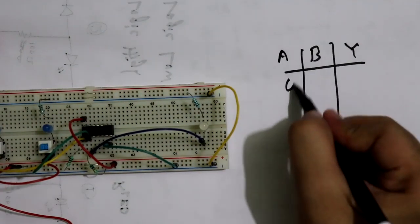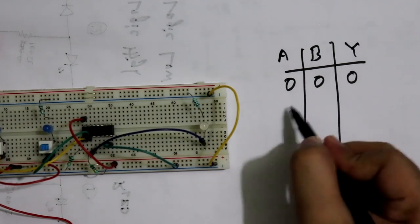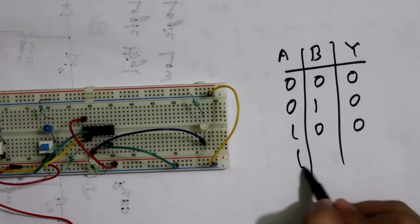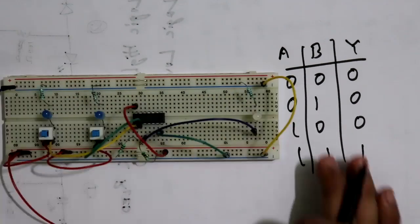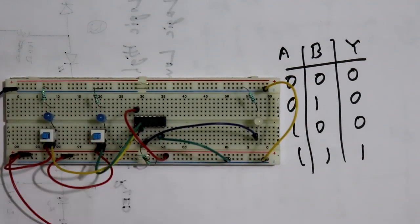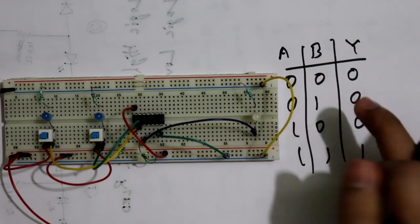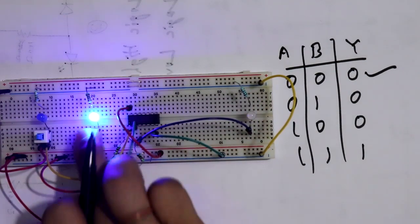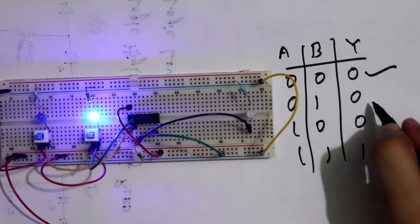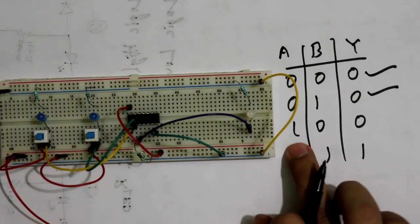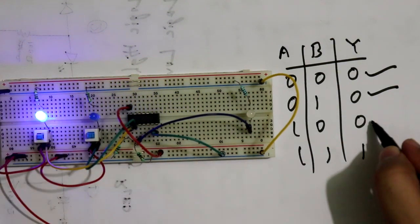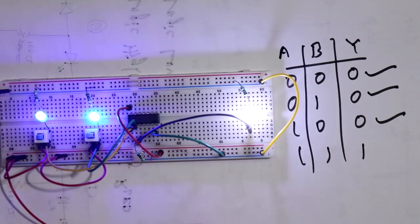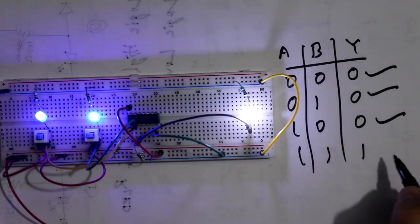Now let's connect the power supply — plus VCC and ground. We know the truth table of AND gate is: 0,0 gives 0; 0,1 gives 0; 1,0 gives 0; and 1,1 gives 1. Here we are not providing any input, so the output is 0.